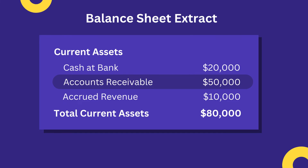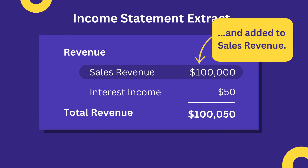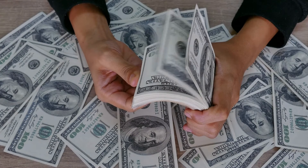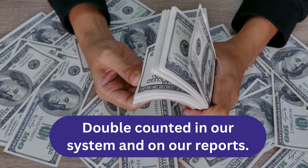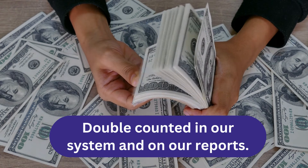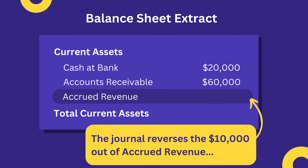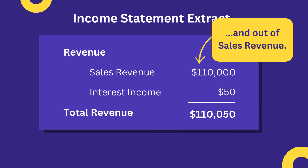Later on, once we create invoices to send to our customers, our accounting system will automatically include the $10,000 in Accounts Receivable on the balance sheet and as revenue on the income statement. At that point, the amount will be double counted in our system and on our reports. To fix this problem, we'll post another journal — the exact opposite to the original journal — which will reverse the $10,000 out of the Accrued Revenue asset on the balance sheet and out of the revenue line on the income statement.